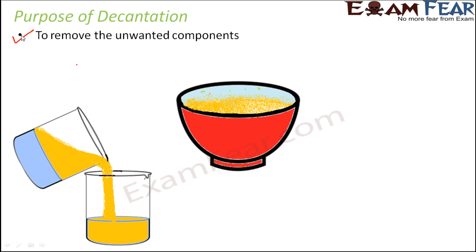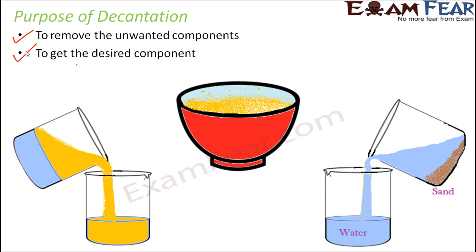So the purpose of decantation can work two ways. One purpose is to remove harmful or undesirable substances. The other purpose is to obtain the desired component — for example, getting clean water from muddy water, where the clean water poured off is the desired component. It depends on which component of the mixture you want to keep or discard.